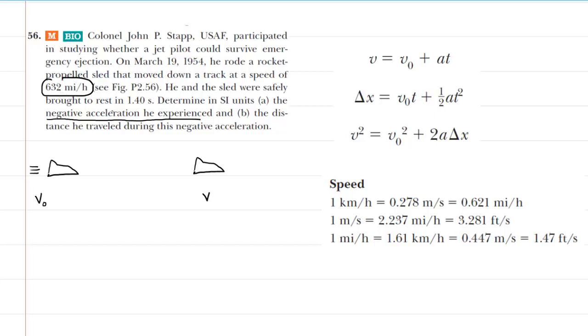Notice we know the final speed is 0 because this rocket-propelled sled is brought to rest. So in this picture, we can mark that the final velocity was 0 miles per hour and that the initial velocity was 632 miles per hour.